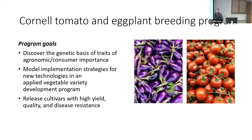I am a vegetable breeder, and the program I'm starting here at Cornell is focused on tomato and eggplant breeding, with an emphasis on the Northeastern United States and New York especially. The objectives of our program are: to discover the genetic basis of traits that are of agronomic or consumer importance in our region; to model strategies for the implementation of new predictive breeding technologies like genomic selection, which have been widely adopted in agronomic crop species but are lagging behind in vegetables; and finally, to release cultivars with high yield, excellent quality, and resistance to prevalent diseases in our region.